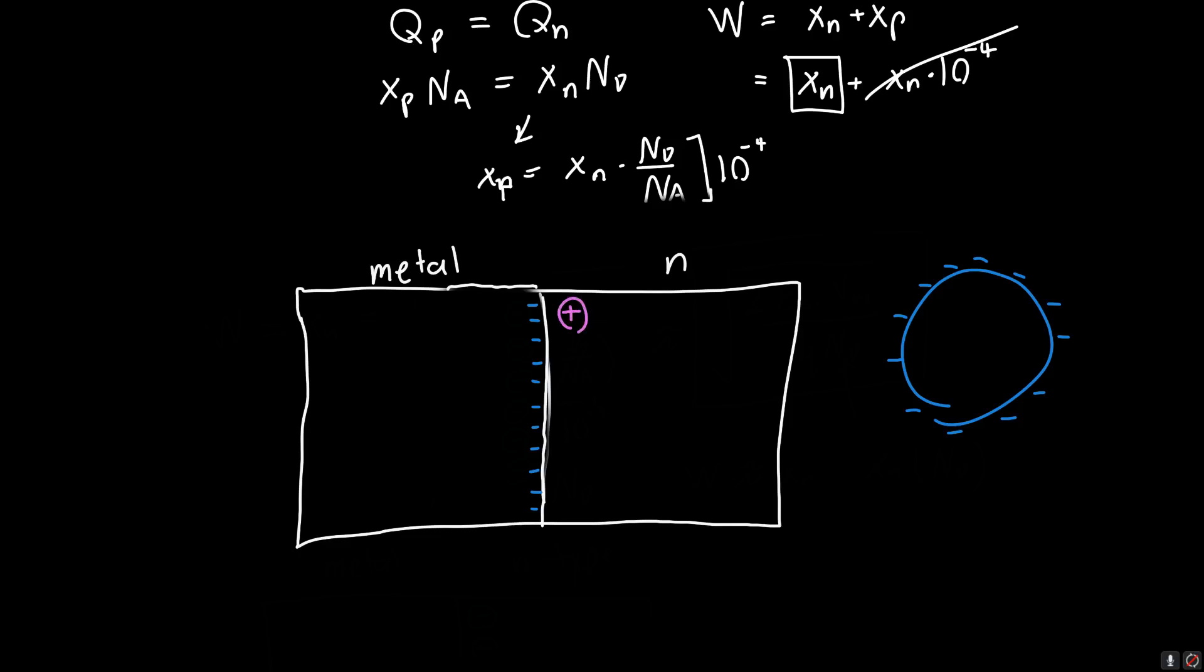Because of the negative charges on the metal side, we need positive charges to counterbalance it on the N side because of charge neutrality. Let's also say that no mobile charges can move over to the N side because we're going to put a barrier here.